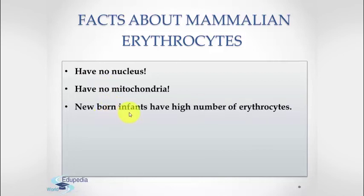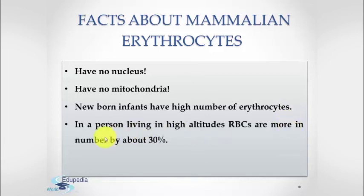Newborn infants have a high number of erythrocytes — up to six to seven million RBCs per microliter, which is a huge amount. Additionally, in a person living at high altitudes, RBCs are more in number by about 30%.